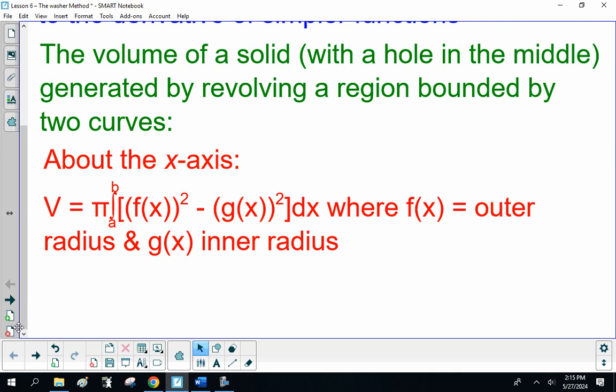Here what we're doing is we're taking the outer radius squared minus the inner radius squared.